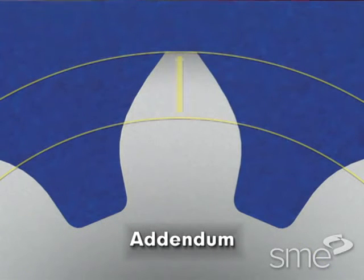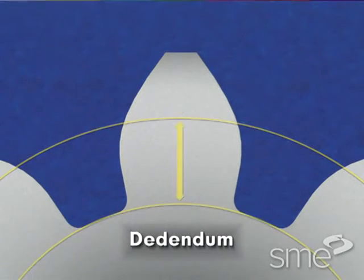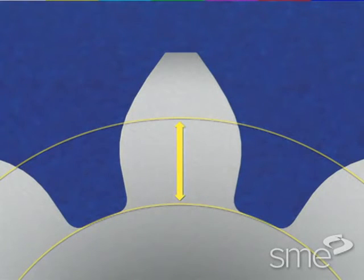The addendum is the radial distance of a gear tooth between the pitch circle and the root circle.